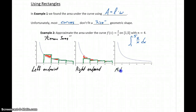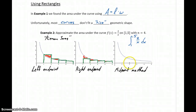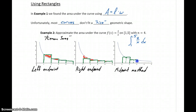The third method is the midpoint method. What we do is take the midpoint of each interval. Halfway between 1 and 2 is 1.5, so we use 1.5 to draw up to our function and close off our rectangle from there. We do the same at 2.5, at 3.5, and at 4.5.